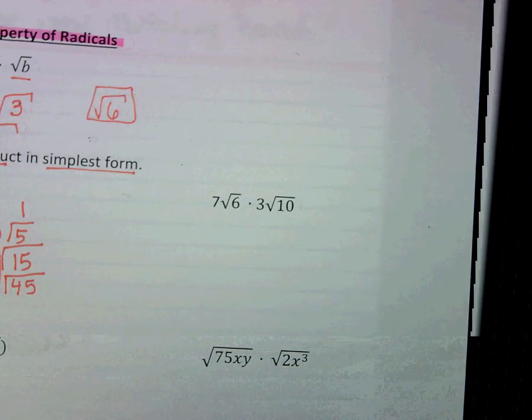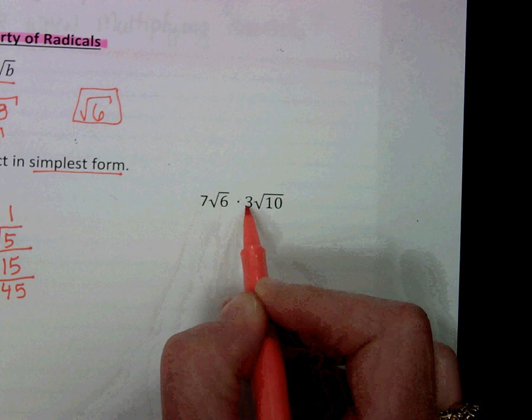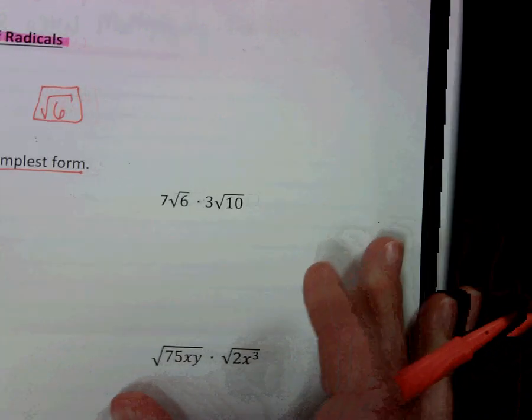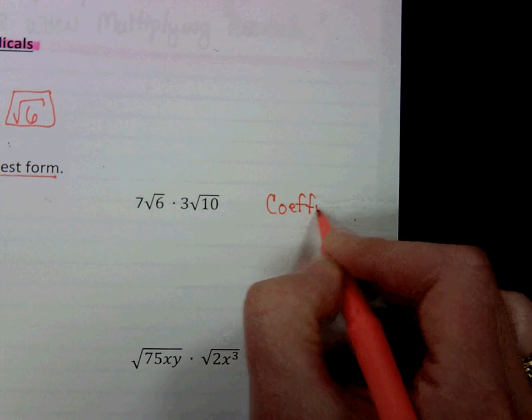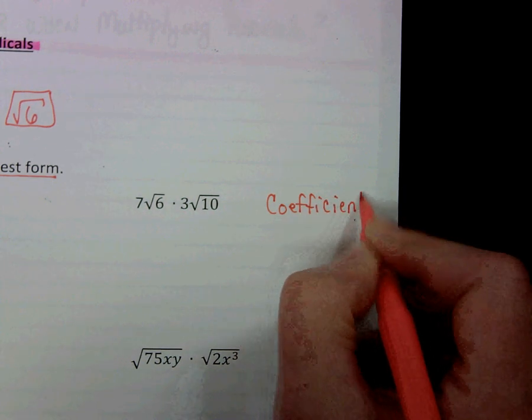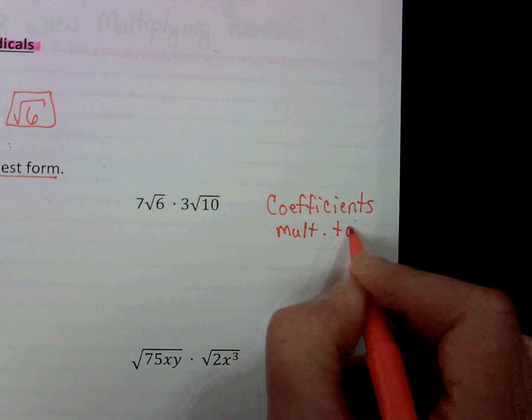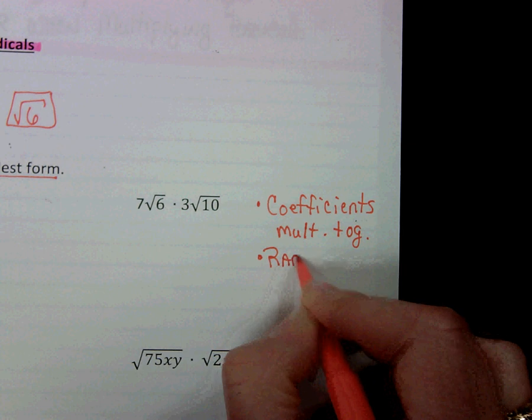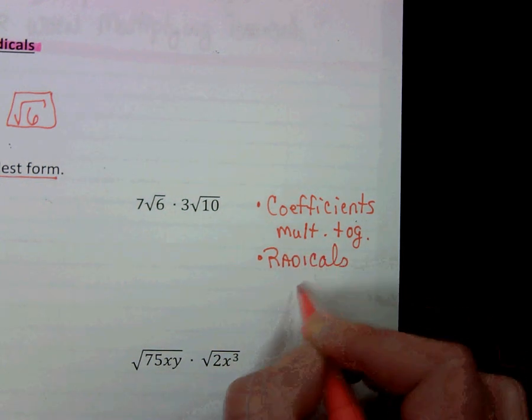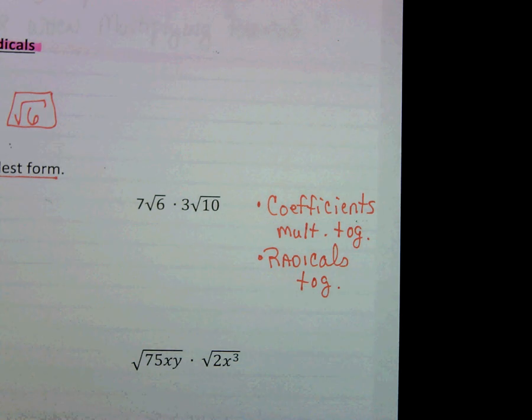The next example is a little bit different because we have coefficients and we have radicals. And so I want you to remember that coefficients multiply together, and radicals multiply together. It's just as if it would be 7x times 3x. Same kind of thing.